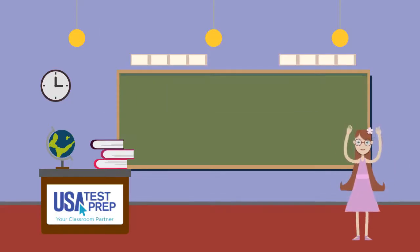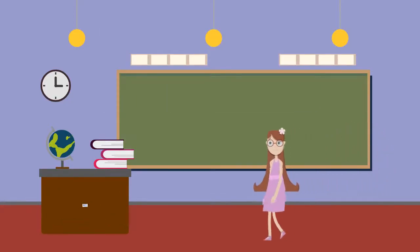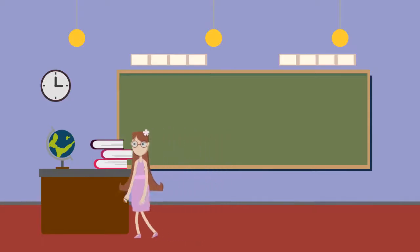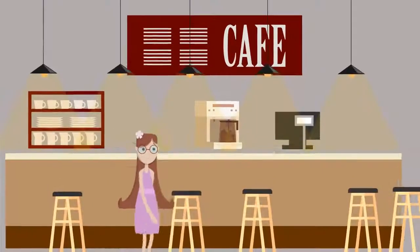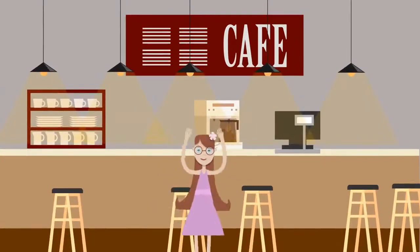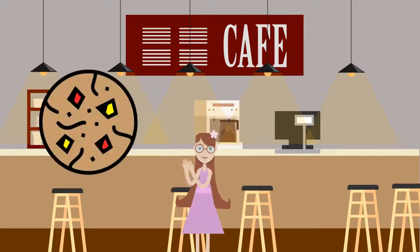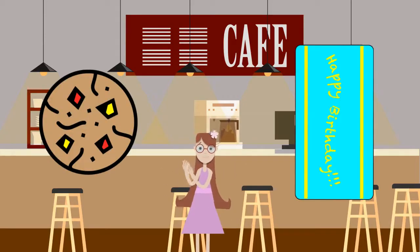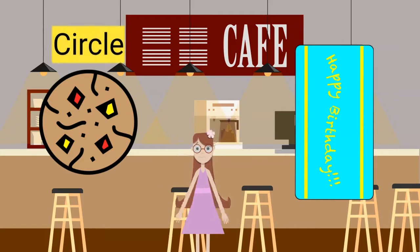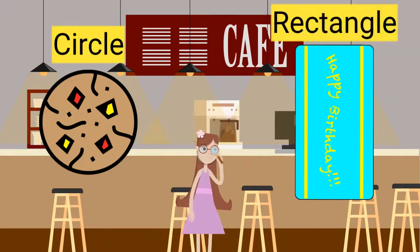Now that we know about shapes and partitioning, let's go to the coffee shop to learn more. We are at the coffee shop. At the coffee shop, I can get a cookie or a piece of cake. The cookie is a circle, and the cake is a rectangle.